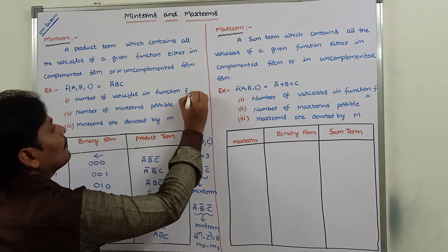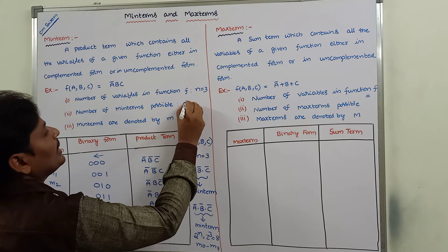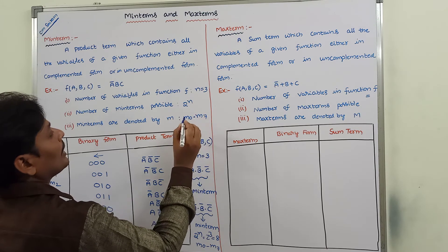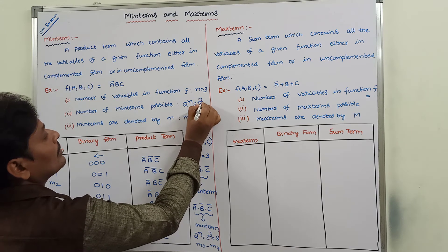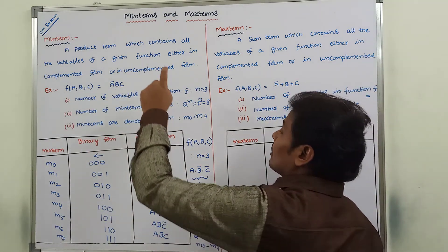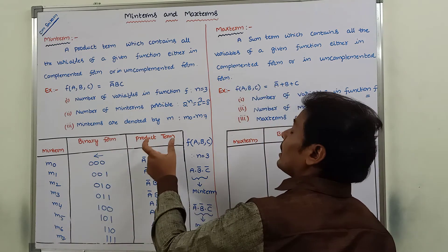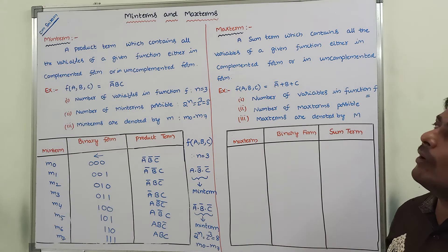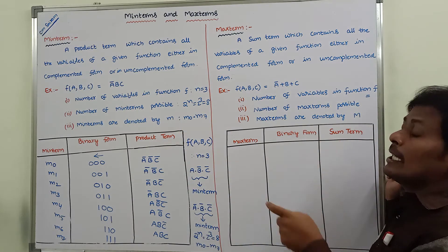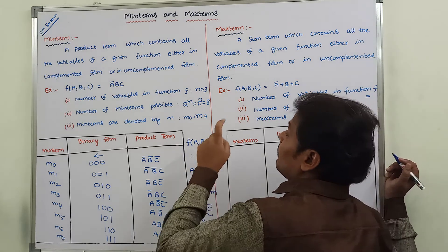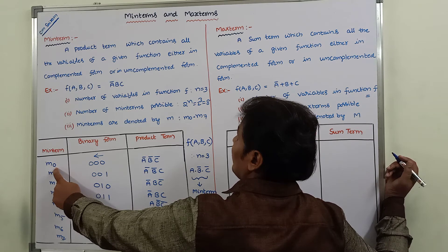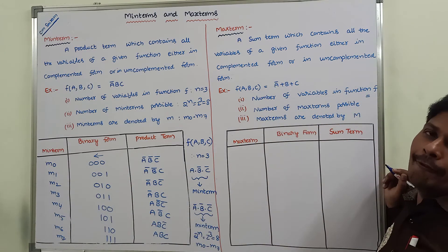So with n equal to 3, 2 power 3 gives 8 min terms possible, from m0 to m7. If n equals 4, then 2 power 4 equals 16 min terms are possible. In that case, whatever integer appears in the suffix is represented in 4-bit binary form.